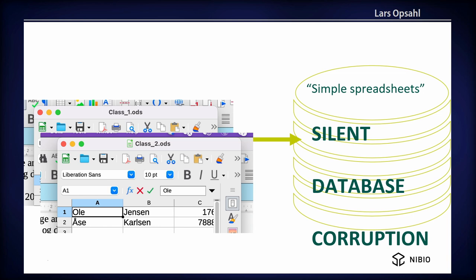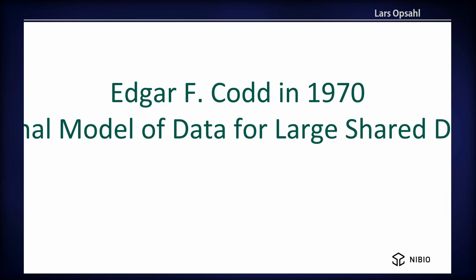In 1970, this guy, Codd, wrote a paper which totally changed the database industry about how to use relational database models for large shared data. IBM had to switch this technology about how they store data in a database.